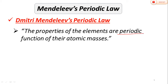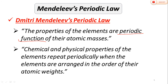Now here we have written 'periodic function.' A periodic function means a function which repeats after a certain interval. So the physical and chemical properties of the elements repeat periodically when the elements are arranged in order of their increasing atomic weights. This is the sense of periodic properties — that they repeat after a certain interval.